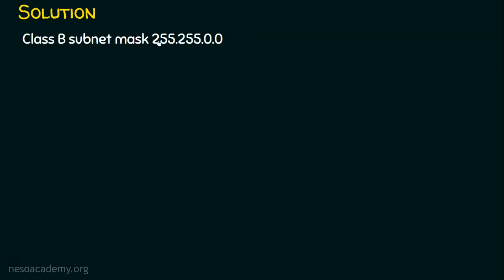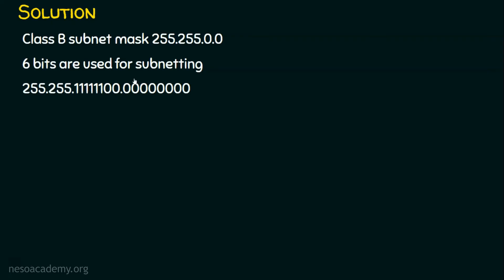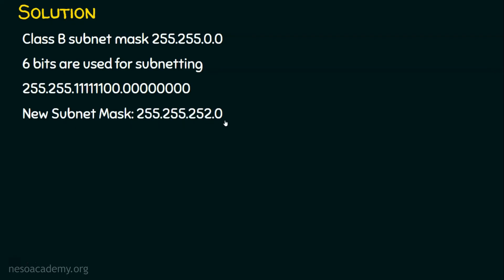We are going to reserve 6 ones in the third octet, because it's a class B subnet mask and the first two octets remain unchanged. So 6 bits are used for the subnetting, which is mentioned in the question — 6 bits are used for the network portion. We get 255.255 retained, then these 6 bits are reserved for the network portion and the remaining bits are 0. So 2^6 networks are possible. The new subnet mask will be 255.255.252.0, because 6 bits set to 1 in the third octet gives 252.